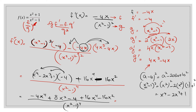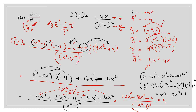Collecting like terms: negative 4x to the power 4 plus 16x to the power 4 gives 12x to the power 4. Then 8x squared minus 16x squared gives negative 8x squared, plus the remaining negative 4, all divided by (x squared minus 1) to the power 4. We can factor out 4 to simplify, giving 4 times (3x to the power 4 minus 2x squared minus 1) over (x squared minus 1) to the power 4.